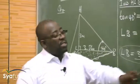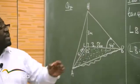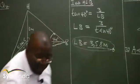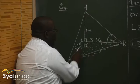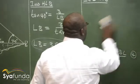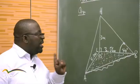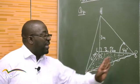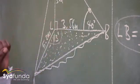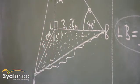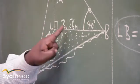In triangle ABL, let's check what we have. We do have this side, we also have that side, we also have the included angle. Whenever we have that scenario, that's where we use the cosine rule. The cosine rule says AB squared is equal to this side squared plus that side squared minus two times this side times that side, cosine of this angle.